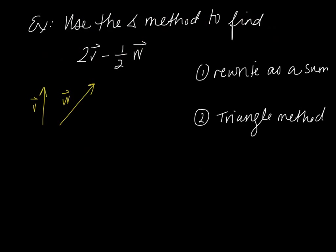We want to use the triangle method to find 2 times vector v minus 1 half vector w. So I'm going to rewrite this as a sum because the resultant we always write as a sum of two vectors. This is going to be 2 times vector v plus negative 1 half vector w. So I'm going to start with vector v here and multiply it by 2. Vector v points straight up, about that long and that long again. So that is 2 times vector v.